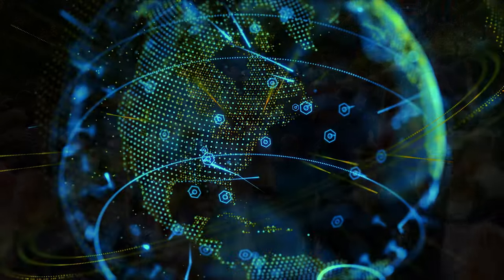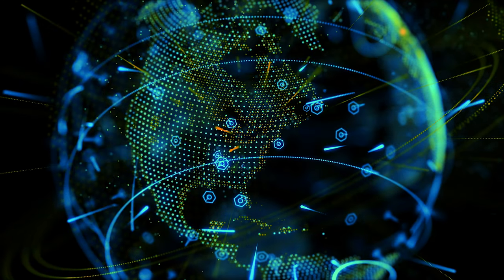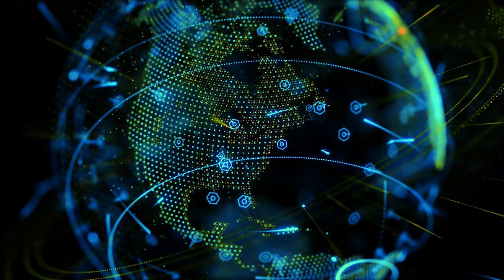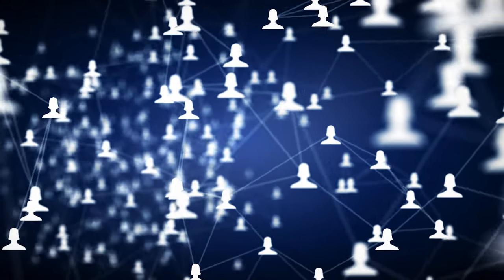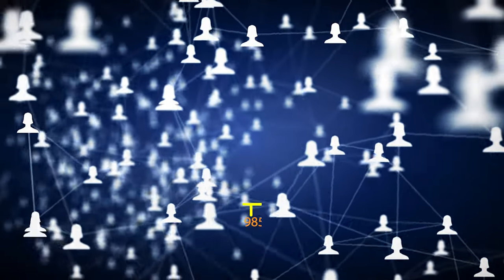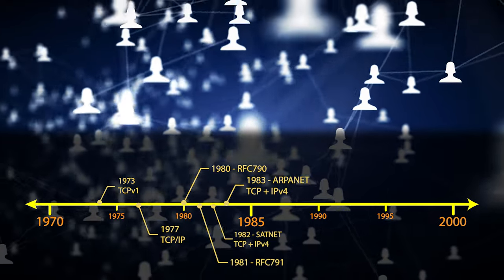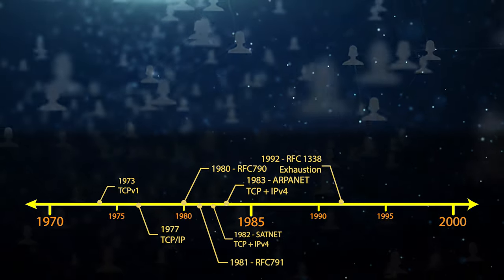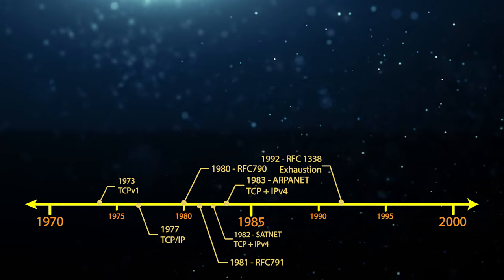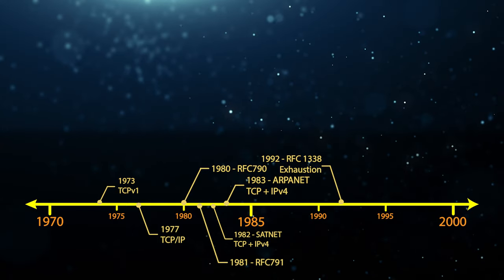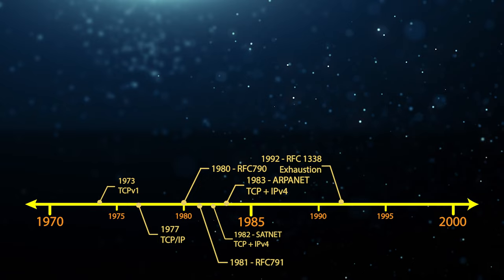The World Wide Web was invented. Businesses got online. Some people even had internet access in their own homes. By the end of the decade, it was predicted that the global IP address pool would soon be exhausted. Something needed to be done. In 1992, the first official document outlined some conservation strategies to combat the unexpected explosive growth of the internet.